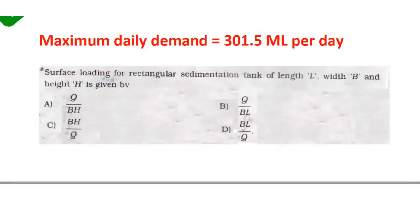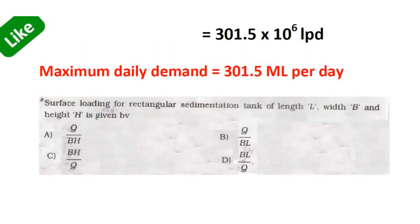Surface loading for a rectangular sedimentation tank of length L, width B, and height H is given by the surface loading formula. That is option B: Q by BL. Here Q is discharge, B is the width of the tank, and L is the length of the tank. Surface loading depends on length and width, that is the surface area.